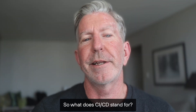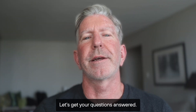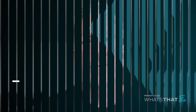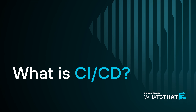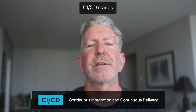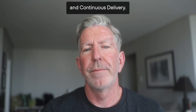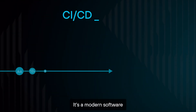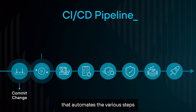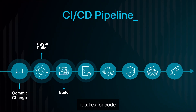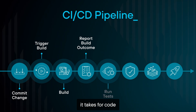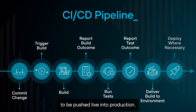What does CI/CD stand for? CI/CD stands for Continuous Integration and Continuous Delivery. It's a modern software development practice that automates the various steps it takes for code written by a developer to be pushed live into production.